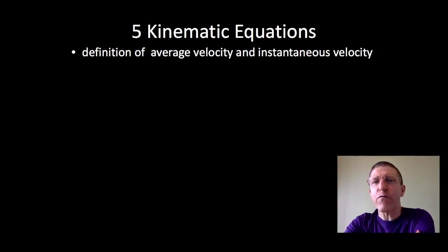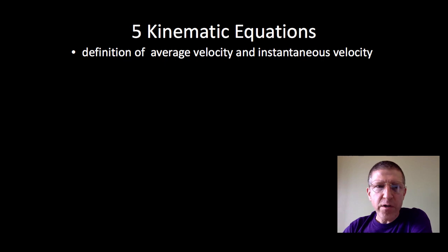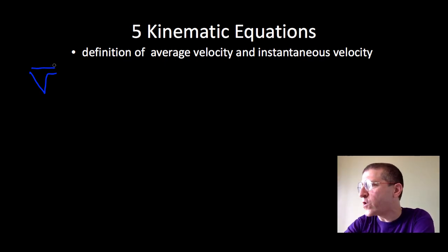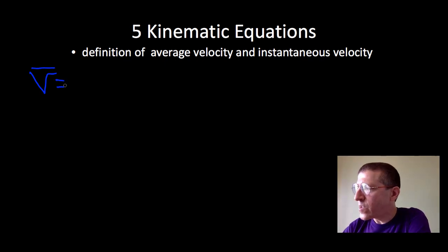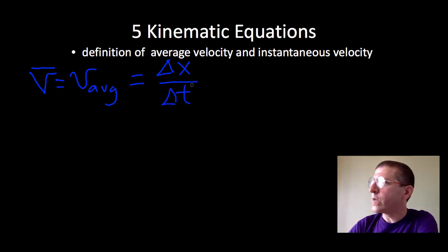The five kinematic equations start with the definition of average velocity and instantaneous velocity. We're going to leave off the directional subscripts — you can add those later. V-bar, that is the average velocity, and we define this as delta X over delta T. If you're talking about vertical, of course, it would be delta Y over delta T.